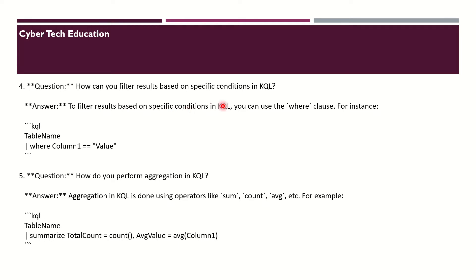The next question is: how can you filter results based on a specific condition in KQL? To filter results based on a specific condition you can use the WHERE clause. For instance: TableName | where Column == 'value'. This is how we can filter the result based upon a specific condition.